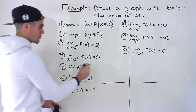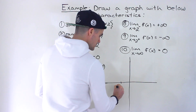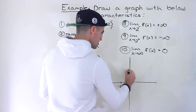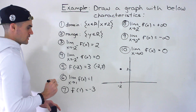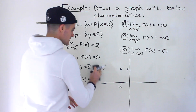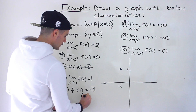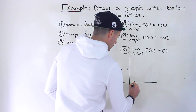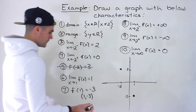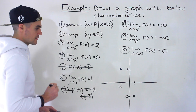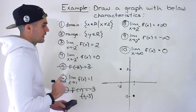We're told f(-2) = 3, so that's the same as the point (-2, 3). Let's say negative 2 is over here and we've got a y value of 3, so the point is right there — that is characteristic 5. Then we have f(1) = -3, so that's another point at (1, -3). So we end up having that point. Those are the only points that are given; the rest are limits or domain and range.